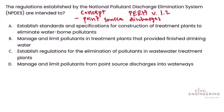Let's look at each answer choice based on knowing that the NPDES system deals with point source discharges. Answer choice A says: establish standards and specifications for construction of treatment plants to eliminate waterborne pollutants. Well, it's not just limited to treatment plants — we said any point source discharge. And we didn't say anything about standards for construction; we talked about standards for pollutants in the discharge. So answer choice A is not correct.